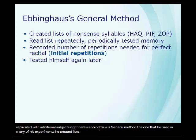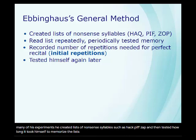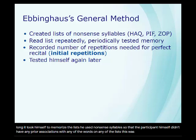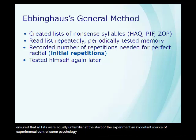He created lists of nonsense syllables, such as hack, piff, and zap, and then tested how long it took himself to memorize the lists. He used nonsense syllables so that the participant himself didn't have any prior associations with any of the words on any of the lists. This was important because it ensured that all lists were equally unfamiliar at the start of the experiment — an important source of experimental control.